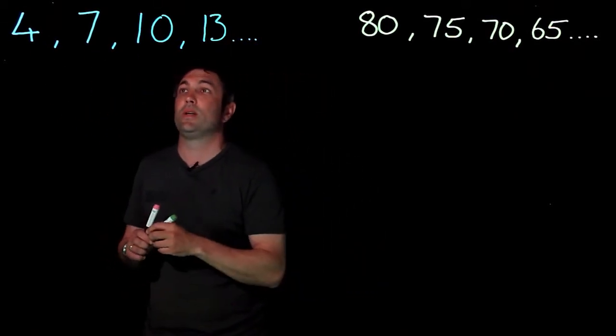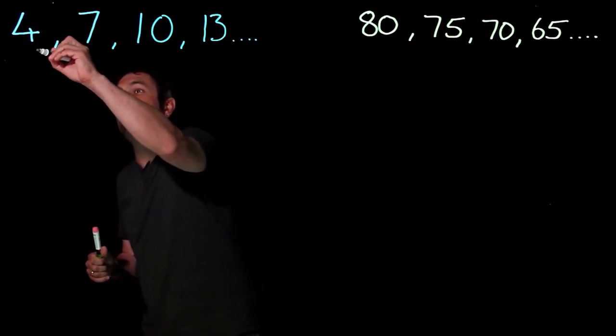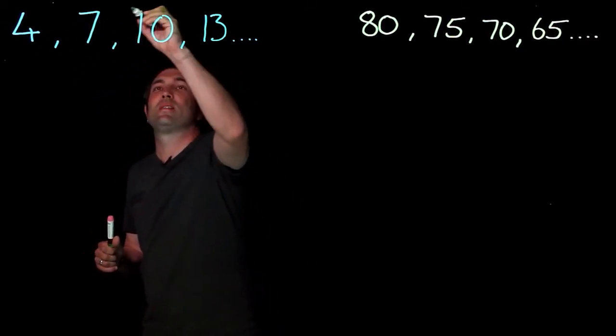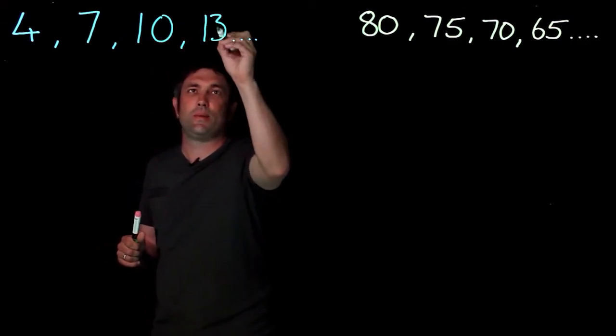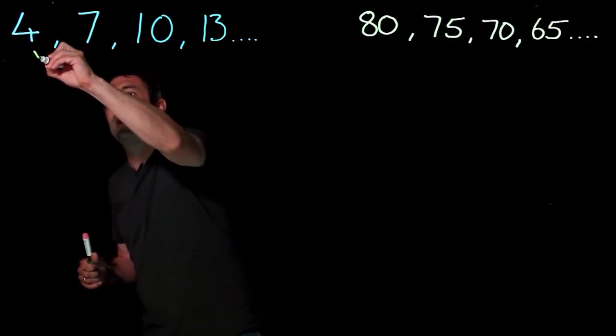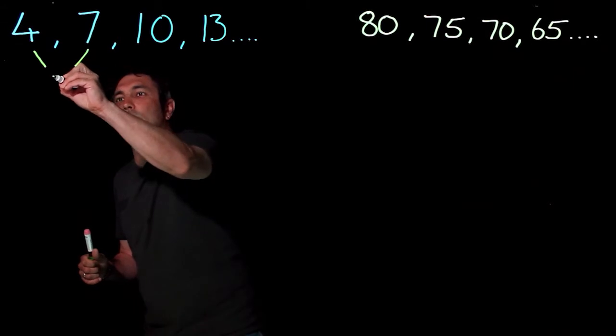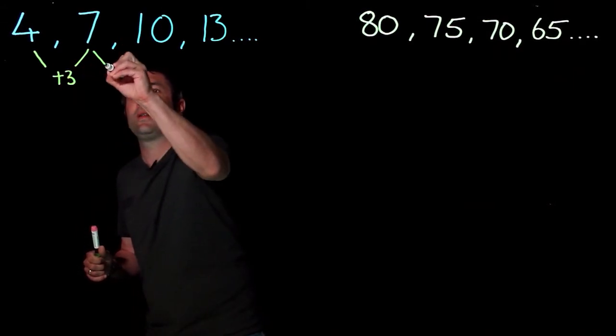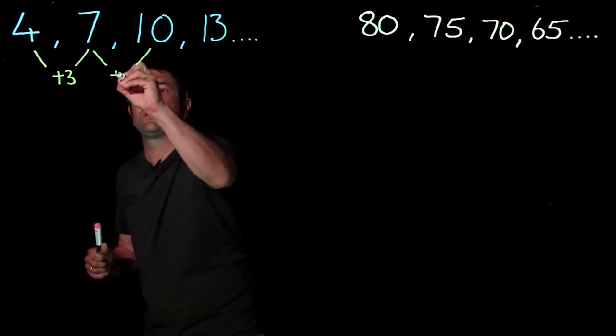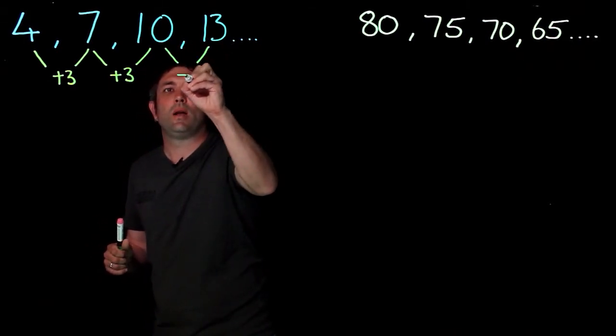What do we add on to 4 to get to 7? Then we add the same amount on to get to 10, the same amount on to get to 13, and that is plus 3. So if we carry that sequence on plus 3, carry that sequence on plus 3, and again we're going to get to whatever the next one is plus 3.